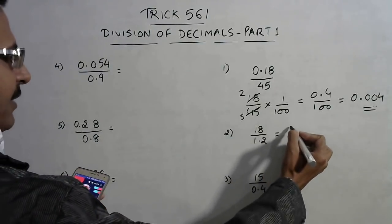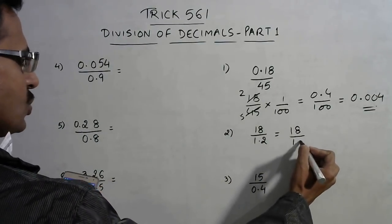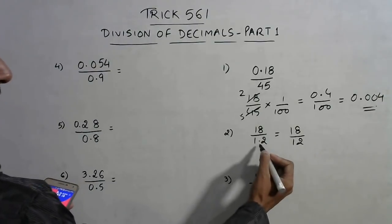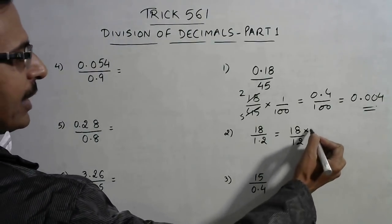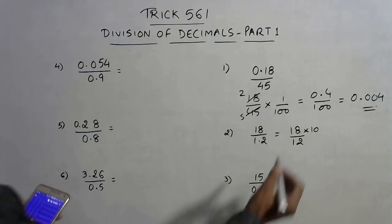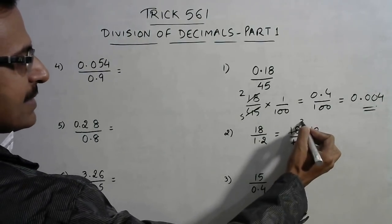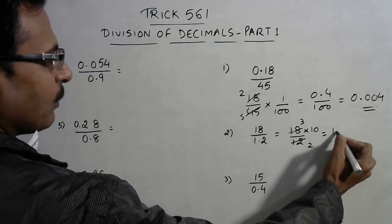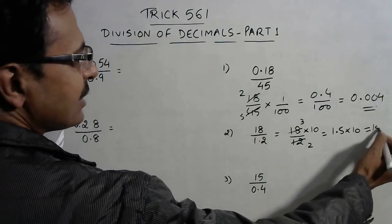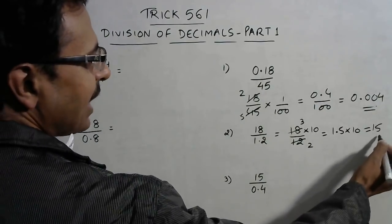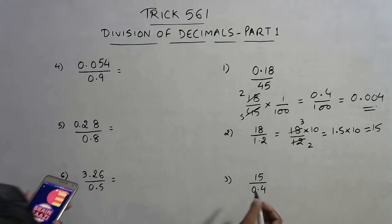Similarly, here we have 1.8 in the numerator and 12 in the denominator. Since there is one decimal place, we multiply the denominator by 10. Simplifying: 6 goes into 18 twice, 6 goes into 12 twice — giving 3/2, which is 1.5. Multiplying by 10 gives 15, so 15 is the answer for this problem.